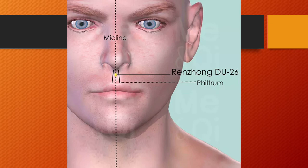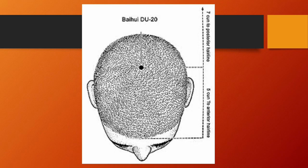GV26, Renzhong, is the crossing point on the governing vessel with the large intestine and stomach channels. GV20, Baihui or 100 meetings, is located on the head, 5 tsun directly above the midpoint of the anterior hairline, or at the midpoint of the line connecting the apices of the two auricles. GV20 is the crossing point of the governing vessel with the six yang meridians; it is also known as the sea of marrow point. Functions: raises the yang, treats prolapse, subdues yang, clears the head, calms the shen, dispels interior wind. Needling: subcutaneous insertion, 0.5 to 0.8 tsun.